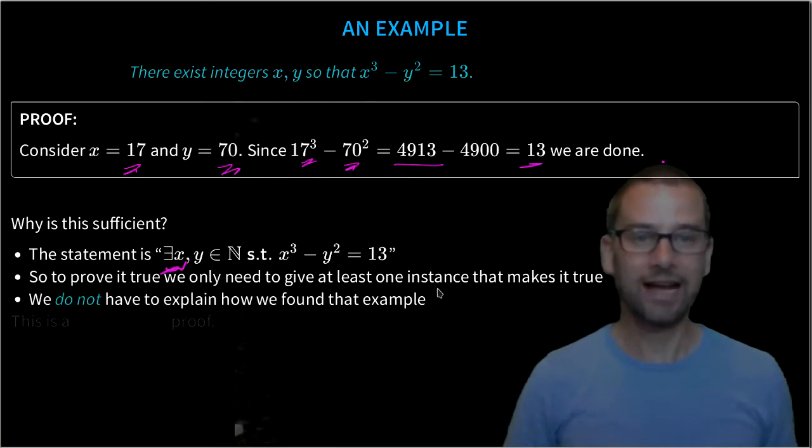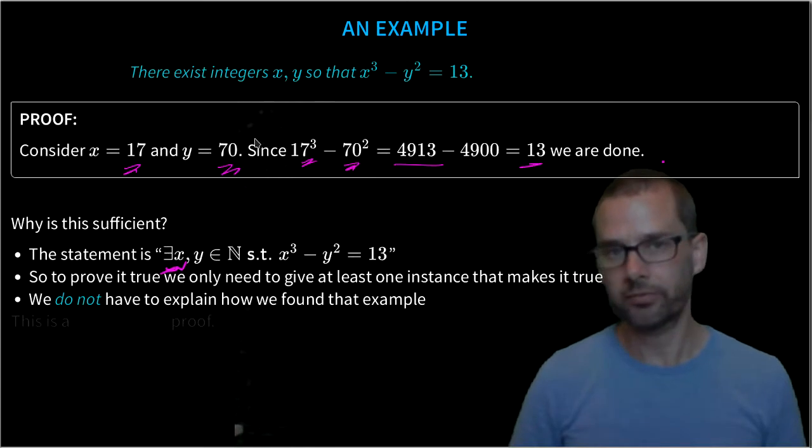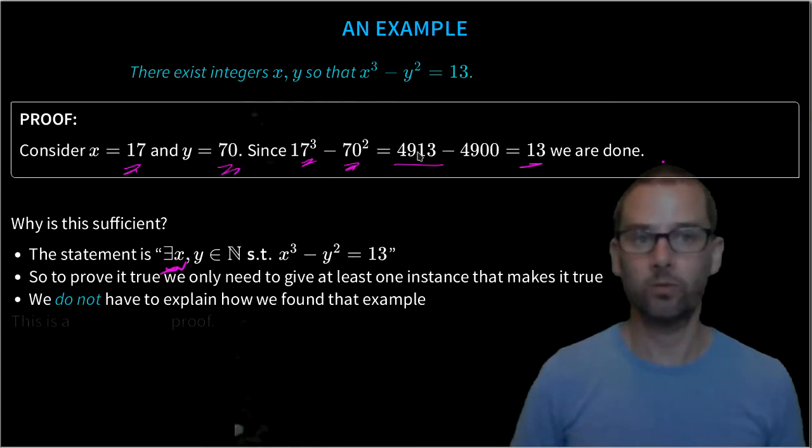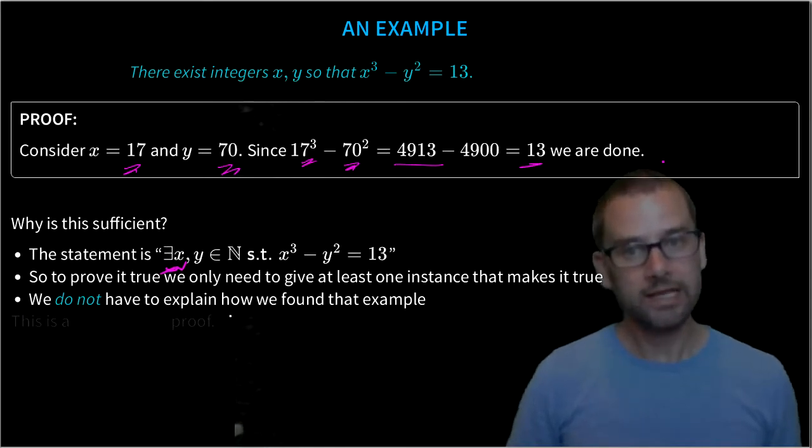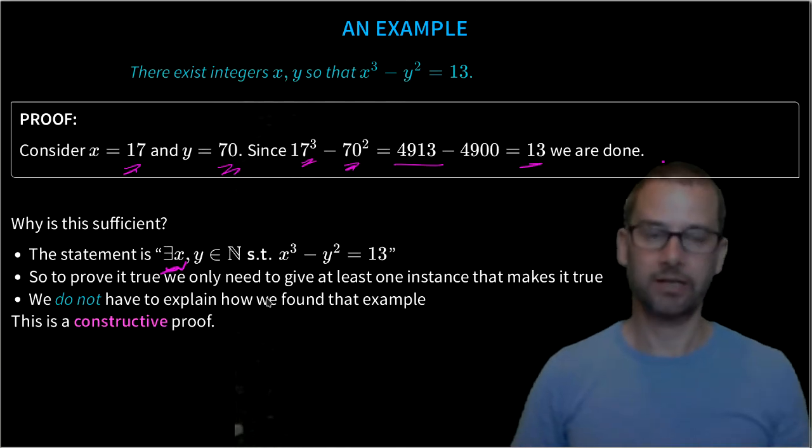We do not actually, as part of the proof, have to explain how we found that. That's not part of the proof. All we need to do is give the example and demonstrate that it works. This is an example of a constructive proof. We actually give the example that makes things work.